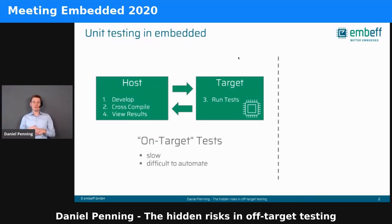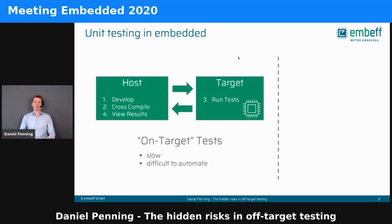Before that, if you have hardware dependencies, you need to do on-target tests. You develop on your machine, you cross-compile for an embedded target, then you need to somehow flash your binary with the unit tests on the target. You can run the tests there, then get back the results and view the test report on your computer. And as you may see, this is really slow because you have this target involved — you need to flash it, you need to deal with hardware. This makes it also difficult to automate on, say, continuous integration.